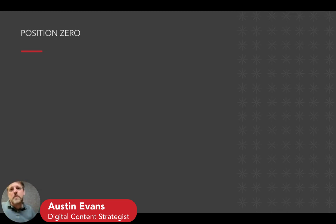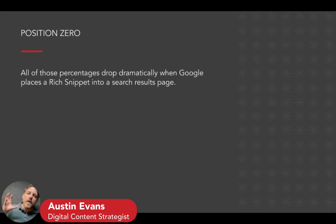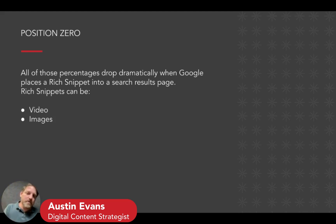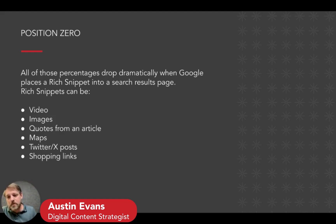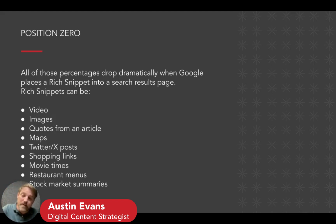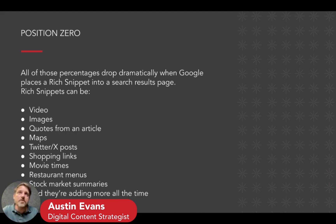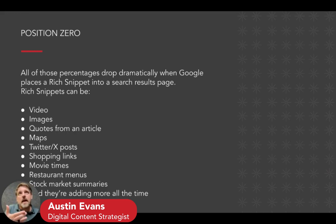Let's talk about position zero — that's an SEO industry term for all of those rich snippets and things that Google puts into search results that aren't actual websites. You've seen them before. They can be video, images, quotes from an article, maps, Twitter posts, shopping links, movie times, restaurant menus, stock market summaries — and they're adding more all the time. Google's job is to keep you on Google. If you can search something and get the answer right there, that's a win for them. That's where they make their money — advertising and all that good stuff.